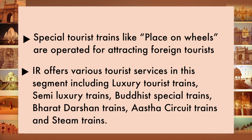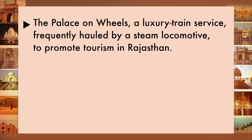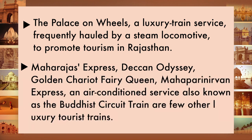Indian Railways also provides special tourist trains — luxury and semi-luxury trains for tourism activities. One of them is the Palace on Wheels, a luxury train frequently hauled by a steam locomotive to promote tourism in Rajasthan. Other luxury tourist trains include Maharaja Express, Deccan Odyssey, Golden Chariot, Fairy Queen, Maha Parinirvan Express, and the Air Conditioned Buddhist Circuit Train. These will be discussed in detail in course TS2.